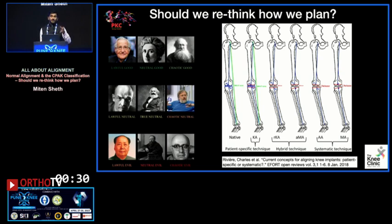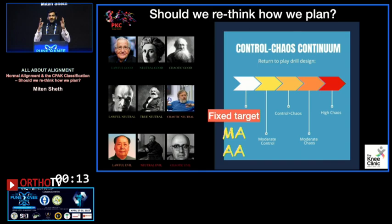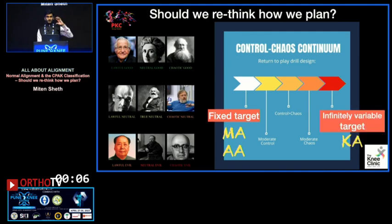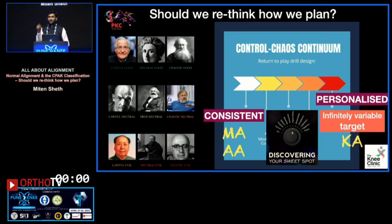We should rethink how we plan. Since this is a sports medicine conference, a good analogy is a control-to-chaos continuum — just like how we rehab patients post-injury. Fixed-target approaches like mechanical alignment and anatomic alignment aim for control, while true kinematic alignment is an infinitely variable target. The sweet spot may be right in the center. As Dr. David Parker said, do what works best with your resources — but as Dr. Brett added, we can always try to do better.